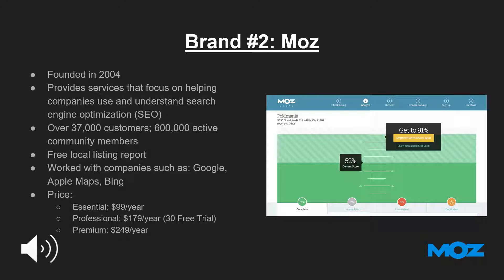Moz was founded in 2004 and provides services that focus on helping companies use and understand SEO. Moz has served over 37,000 customers and has over 600,000 active community members. One of the services Moz provides is a free local listing report, which shows the current score based on a number of SEO factors and also displays the score that the business could have with their services. Some of the companies that Moz has worked with include Google, Apple Maps, Bing, and many others.